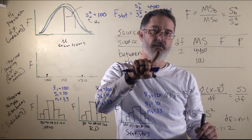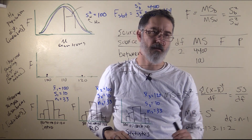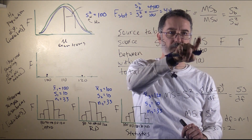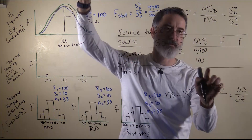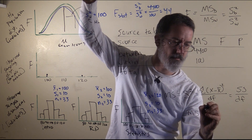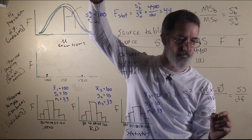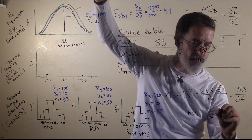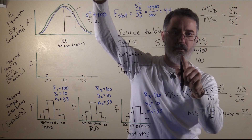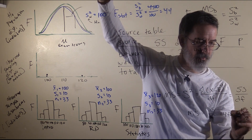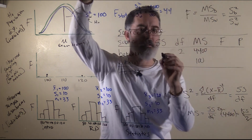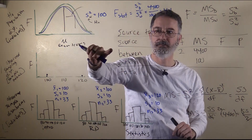We could calculate these sums of squares from scratch from the raw data, and I will have a different video that explains how to do that. But for our purposes right now, it is really easy to calculate because we already know the variance, the mean square, and the degrees of freedom. Mean square equals sums of squares divided by degrees of freedom. Mean square is 4,400, and we are solving for sums of squares, divided by degrees of freedom of 2. So we multiply both sides by 2, and sums of squares equals 8,800 — between groups.